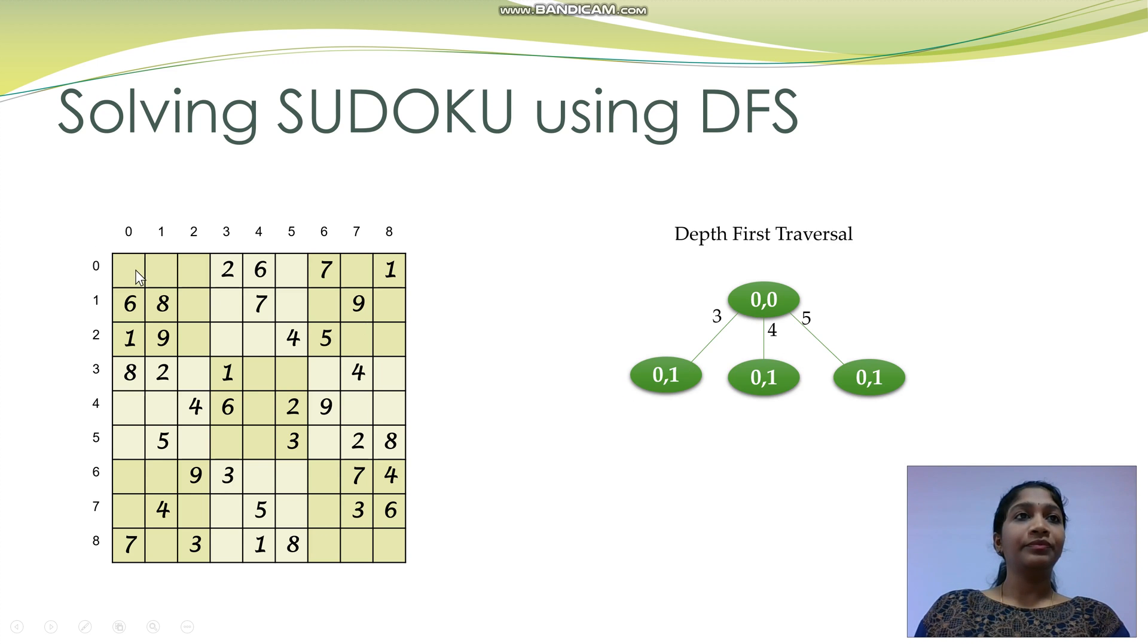We must choose one among these three before moving to the next empty cell which is 0,1. Let me choose 3. So I fill 3 here and try to find a value for the cell 0,1. But there are no unique values that fit here because all numbers from 1 to 9 have already appeared in the row, column and box.